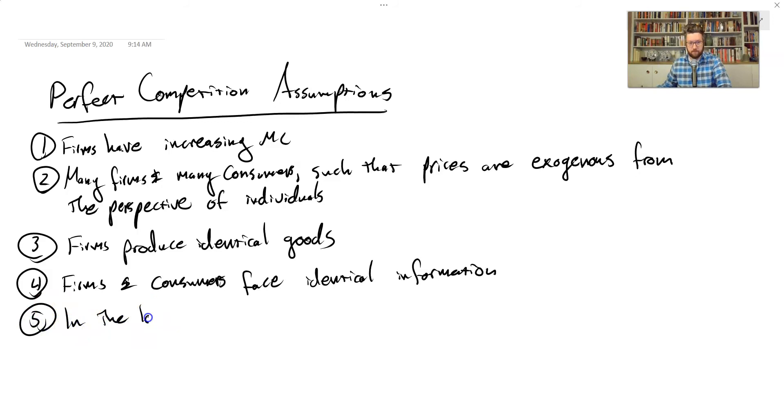Five, in the long run, firms have the same technology. So, except for a very special circumstance, this model implies that it's not really possible for firms to coexist with very different types of cost functions.